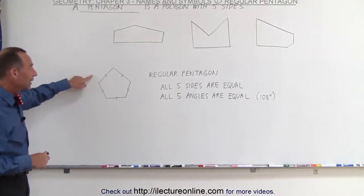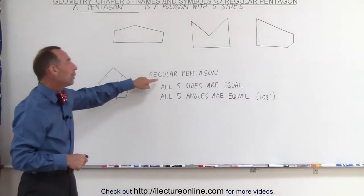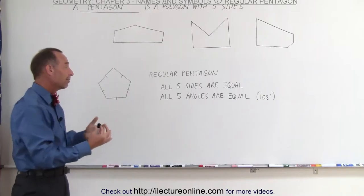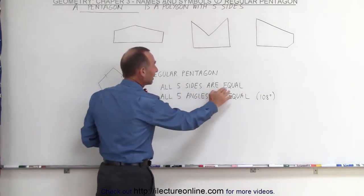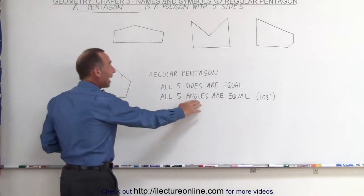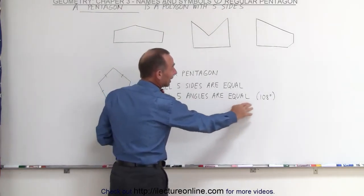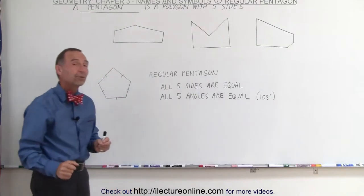But when you want to talk about something like this, you want to call it a regular pentagon. And by definition, a regular pentagon means that all five sides are equal, of equal length, and all five angles are equal. And it turns out that the angles happen to be 108 degrees.